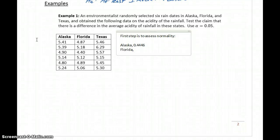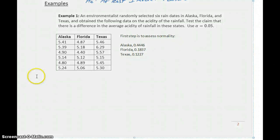For Florida, you should get a p-value of 0.1837, and for Texas, a p-value of 0.1227. You should be able to generate those p-values using the Shapiro-Wilk test and draw the appropriate conclusion that each